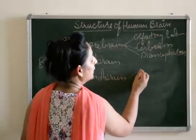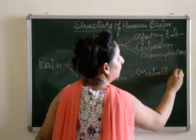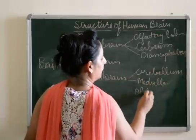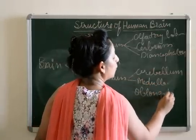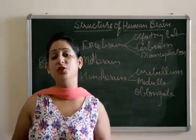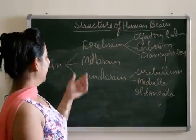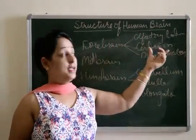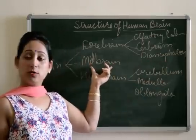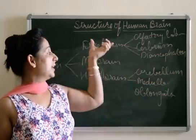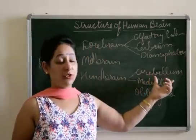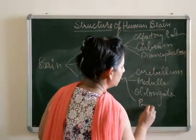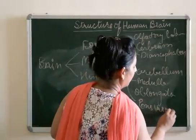Under the hindbrain, we study cerebellum, medulla oblongata, and pons varoli. To summarize the classification: forebrain has three main parts — olfactory lobes, cerebrum, and diencephalon. Midbrain has no divisions and just connects the forebrain to the hindbrain. Hindbrain has three divisions — cerebellum, medulla oblongata, and pons varoli.